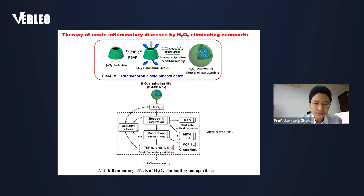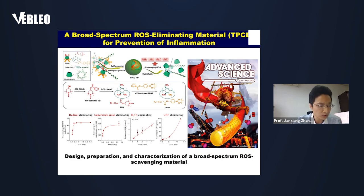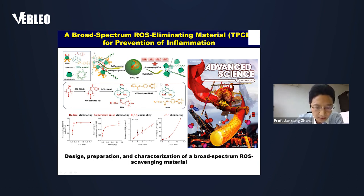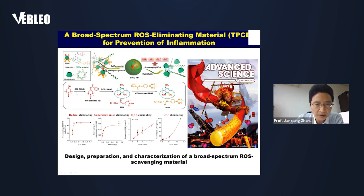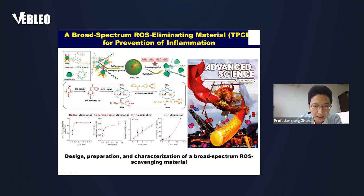Based on this previous finding, we hypothesized that materials with broader-spectrum ROS scavenging capacity may have more effective anti-oxidative stress and anti-inflammatory activities. A broader-spectrum ROS-eliminating material, TPCD, was synthesized by simultaneously conjugating both PBAP and Tempol onto cyclodextrin, using a simple reaction strategy. The obtained material TPCD and its nanoparticles can effectively eliminate free radicals including superoxide anion, hydrogen peroxide, and hypochlorite.